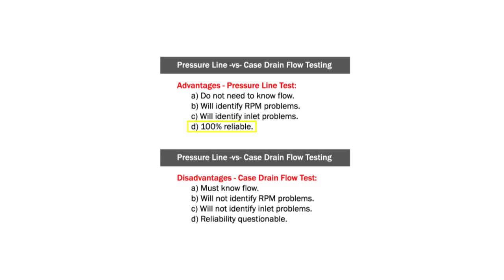A pressure line test is 100% reliable. As you have just witnessed, a case flow test's reliability is questionable. If you do a case flow test, did you actually see the true condition of the pump — or was the oil you were looking for going back to the intake of the pump, giving you a false positive on the condition of your pump?